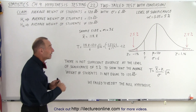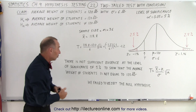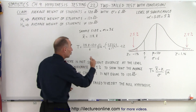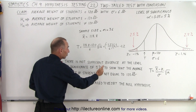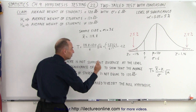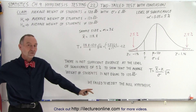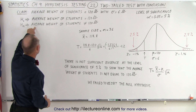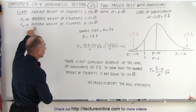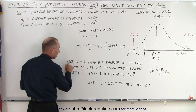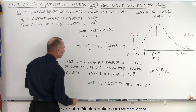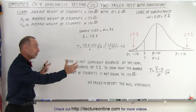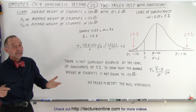Now let's say that the test statistic fell into the critical region — then the sentence would change like this: instead of saying 'is not,' we would say there IS sufficient evidence at the level of significance of five percent to show that the average weight of students is not equal to 120 pounds — that it's something else, bigger or smaller. Then we would be able to reject the null hypothesis and claim that the alternate hypothesis is true. So the only thing that changes is 'there is not' when we cannot reject, versus 'there is' when we can reject the null hypothesis. That is how we use the language of statistics to express the result of this two-tailed test.